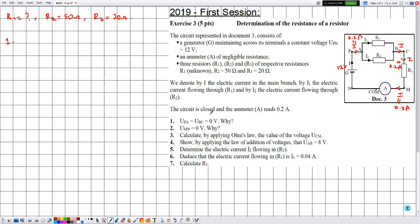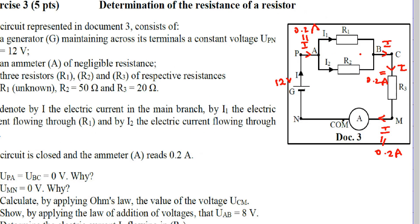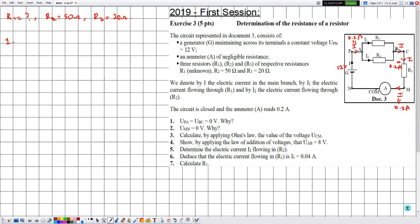In number 1, UPA is equal to UBC is equal to 0 volts. Why? Across P and A we have a connecting wire, and across B and C we have a connecting wire. Therefore, UPA equals UBC equals 0, because the voltage across a connecting wire is 0.